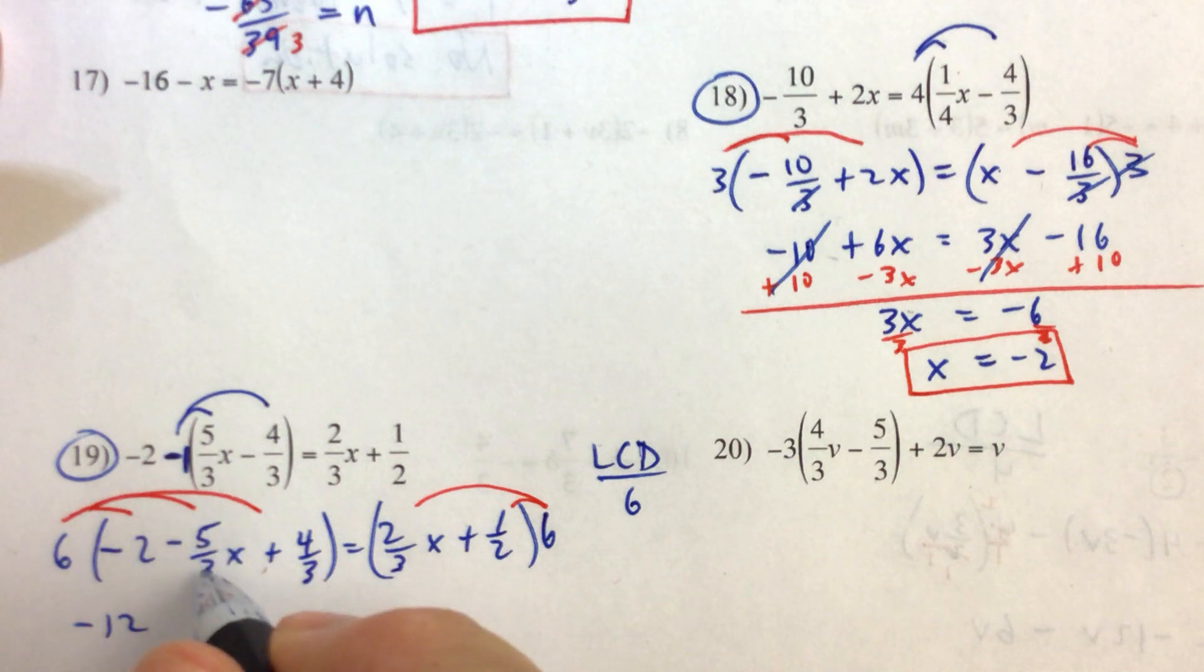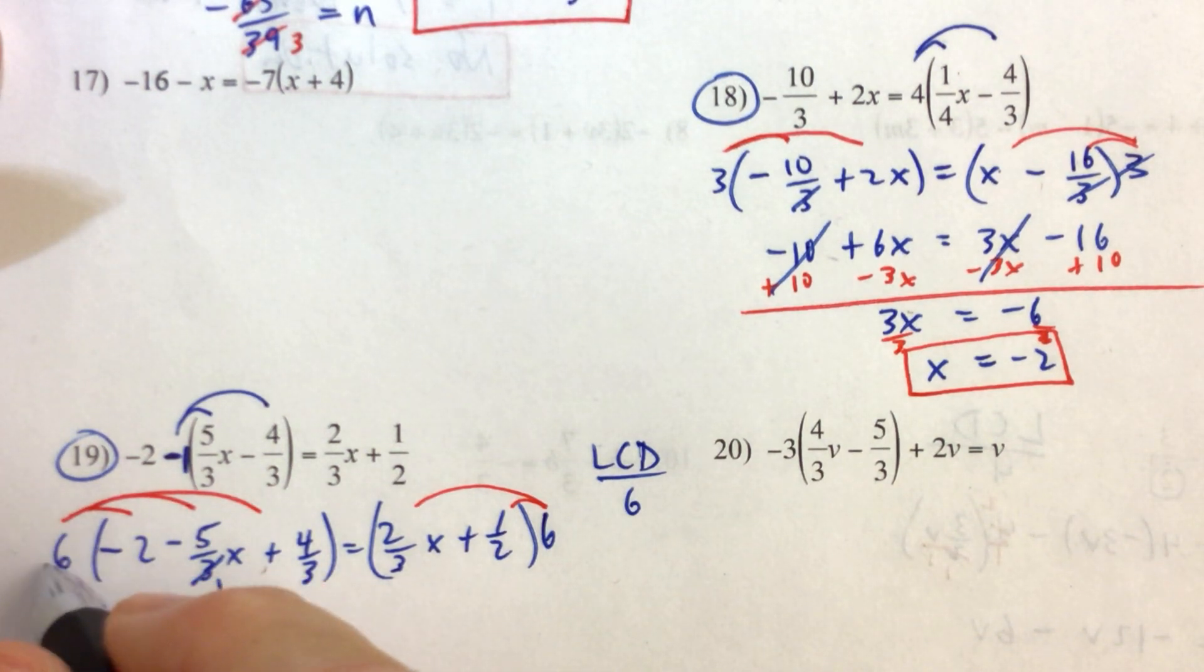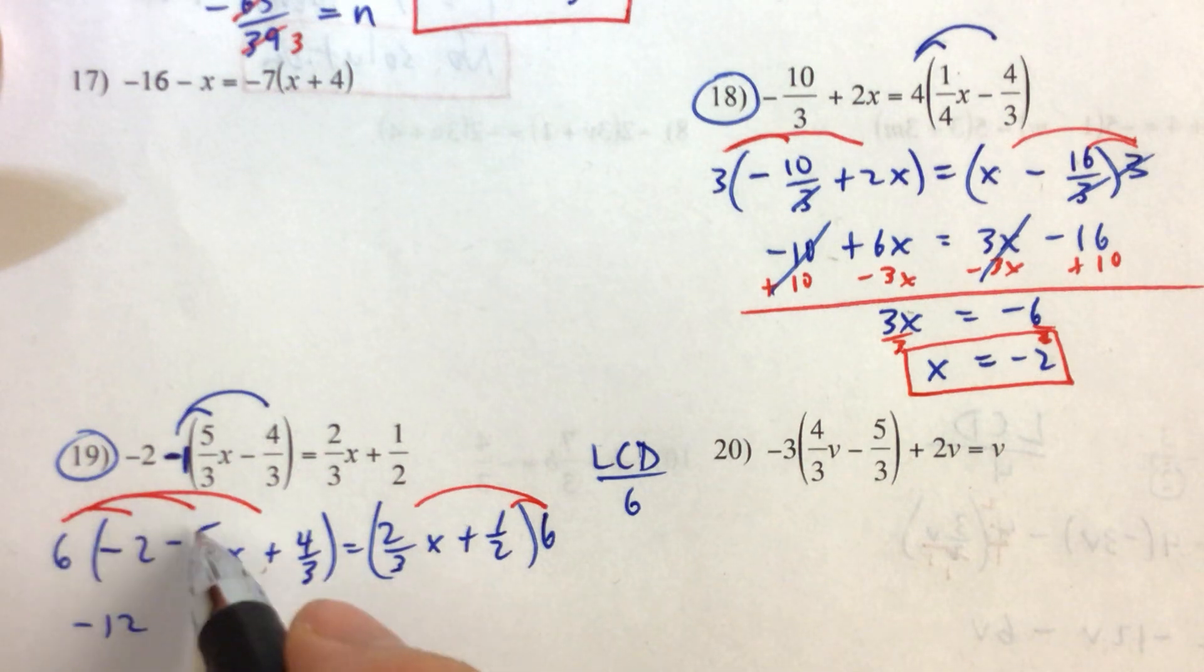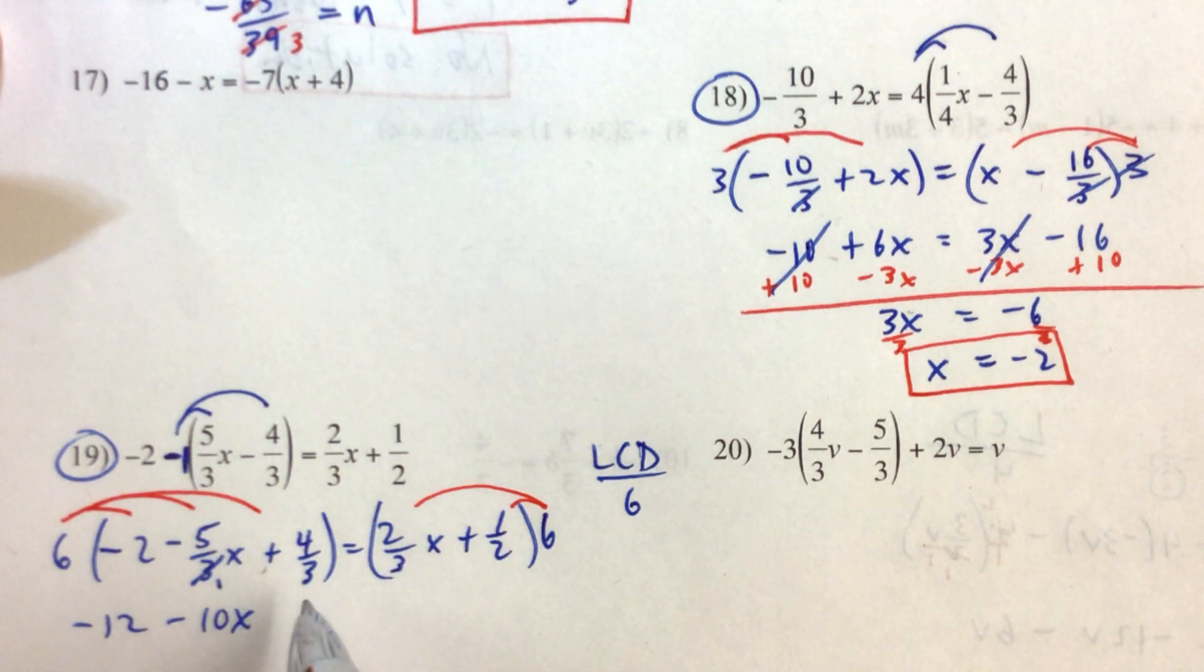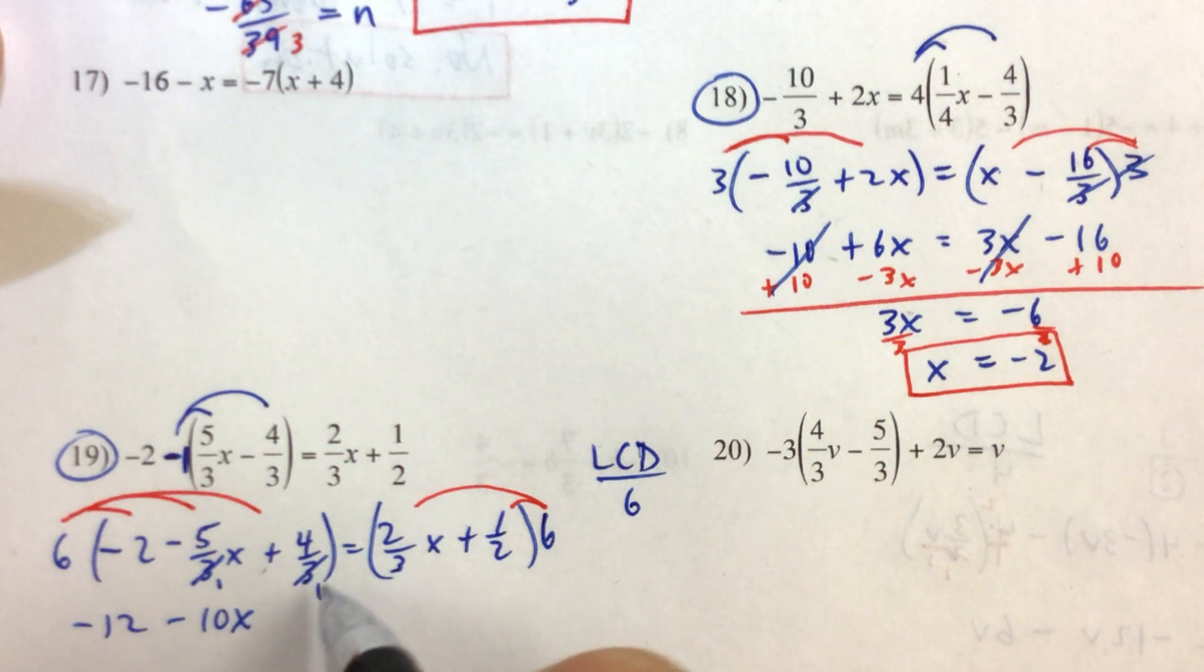6 times negative 5/3, 3 will divide evenly into 3 once and divide evenly into 6 twice. So that's a 2 then times 5. And we have a minus sign here. So 2 times 5x is 10x. Might want to rewind and play that again. 3 divides evenly into 3 once, divides evenly into 6 twice. 2 times 4 is 8.